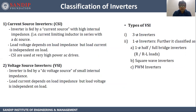Classification of inverters: First, current source inverter (CSI) — the inverter is fed by a current source with high internal impedance, with a current-limiting inductor in series with the DC source. Load voltage depends on load impedance but load current is independent of load. CSI are used in very high power AC drives. Second, voltage source inverter (VSI) — the inverter is fed by a DC voltage source of small internal impedance; load current depends on load impedance but load voltage is independent of load. Types of VSI include three-phase inverters and single-phase inverters, which are further classified into single phase half or full bridge inverters with R or RL load, square wave inverters, and PWM inverters.